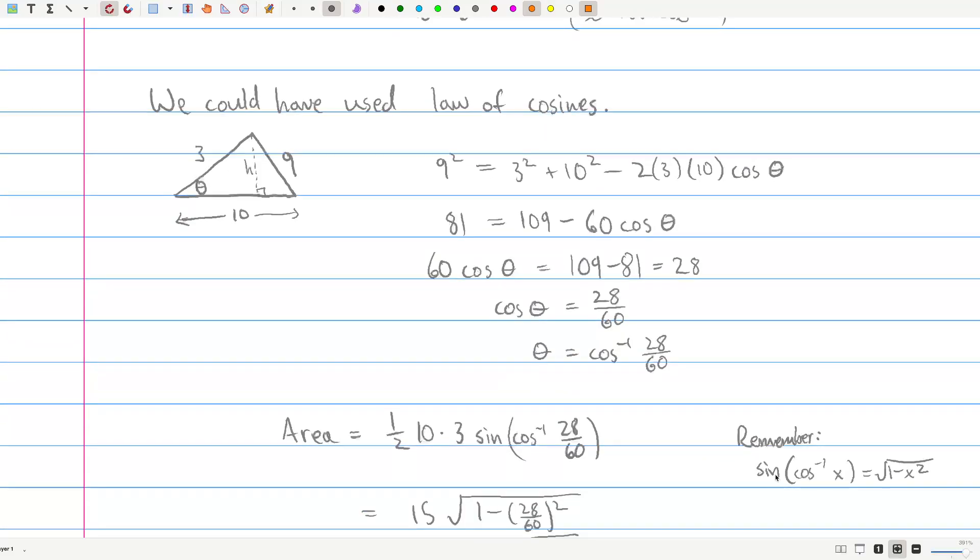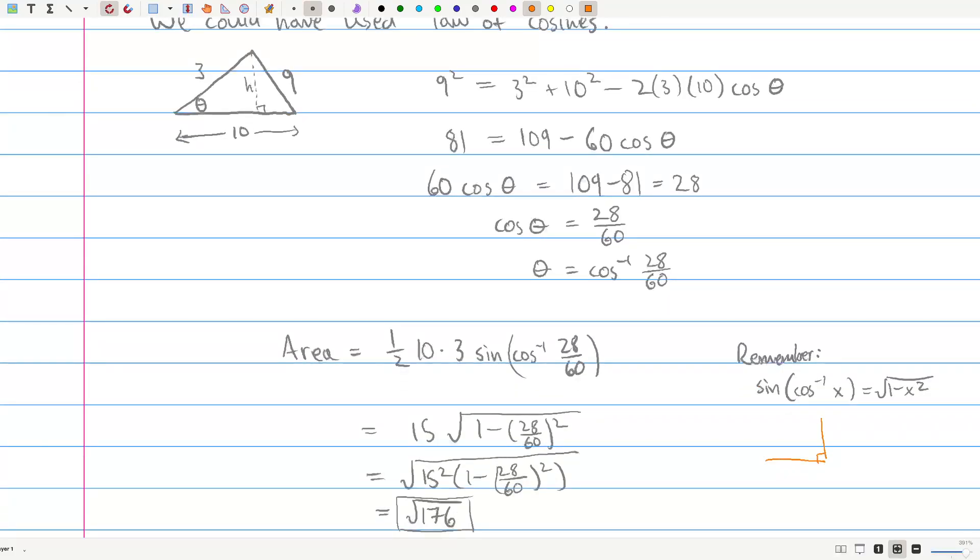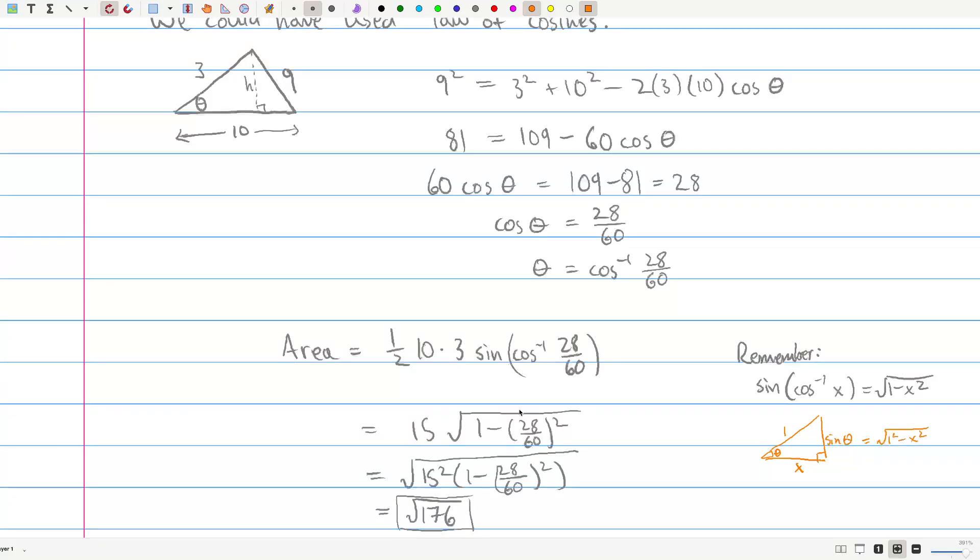Remember from before that sine of cosine inverse of x is square root of 1 minus x squared. Why is that? Let's see. We can draw a triangle for this. So if we want to do the cosine inverse of x, cosine inverse of x would be this theta angle right here, because we've set up a triangle whose cosine is x, and then sine is right here. And to calculate that, we use the Pythagorean theorem. It's 1 squared minus x squared, take the square root. So we can use that formula.